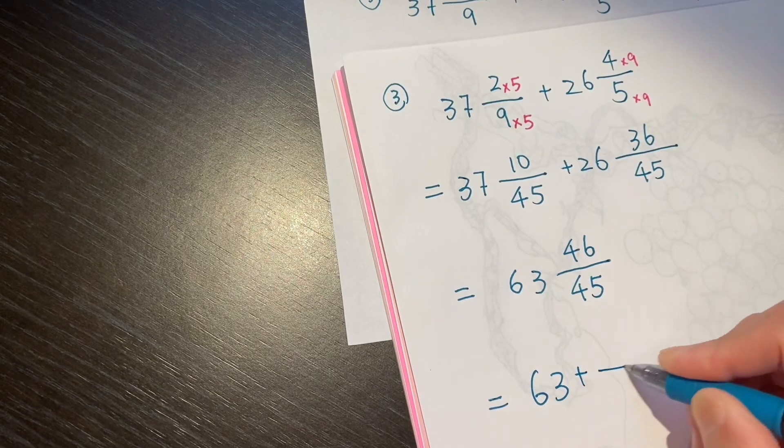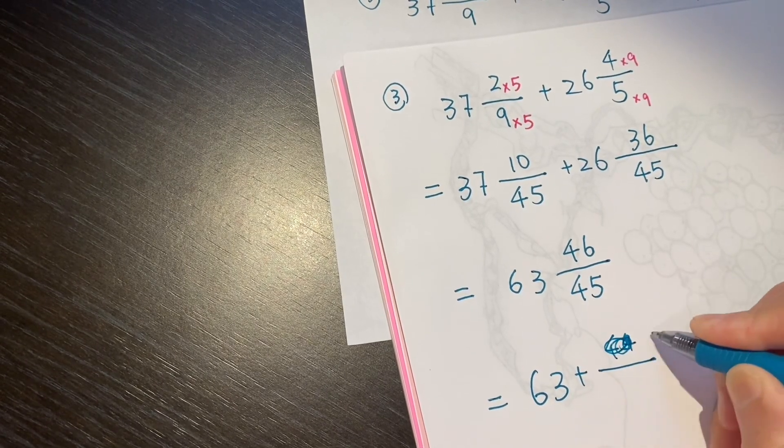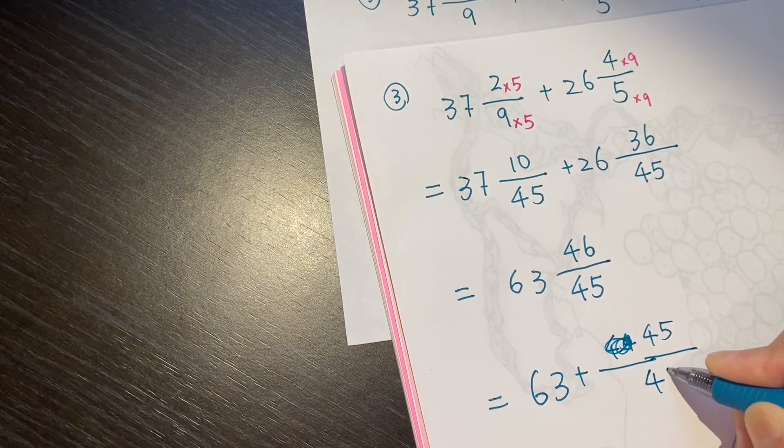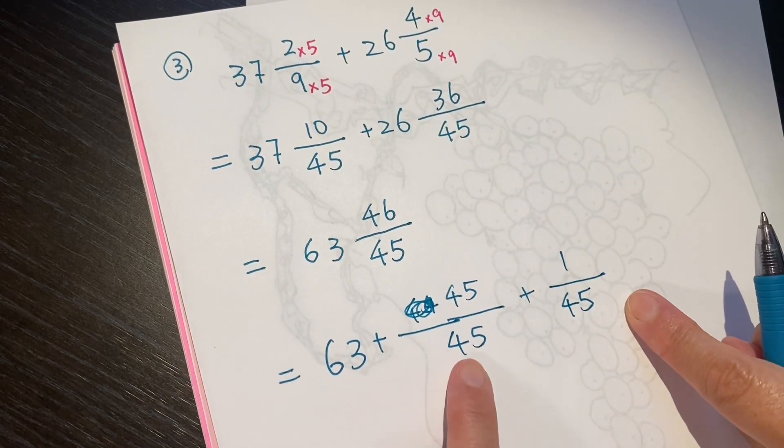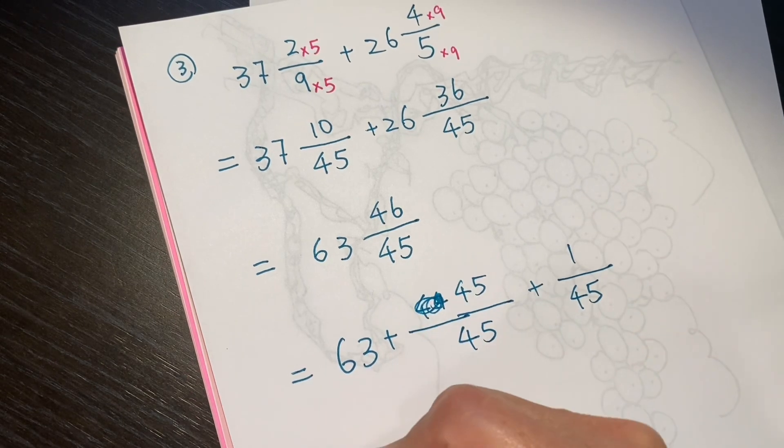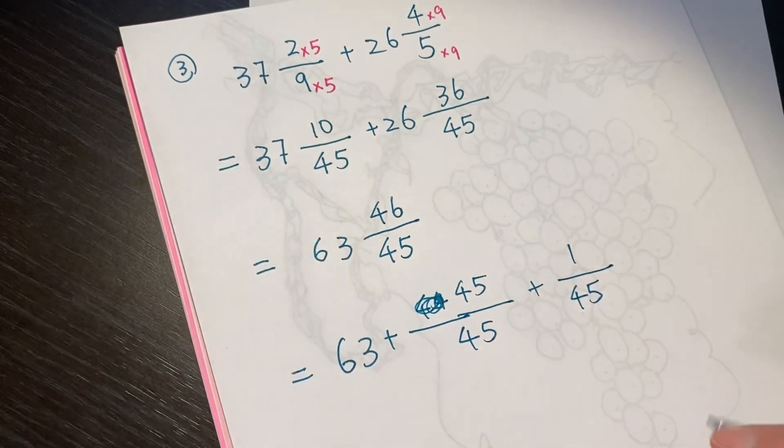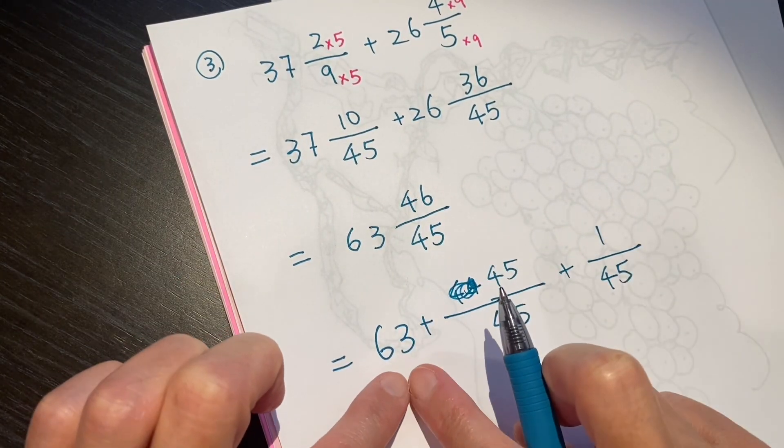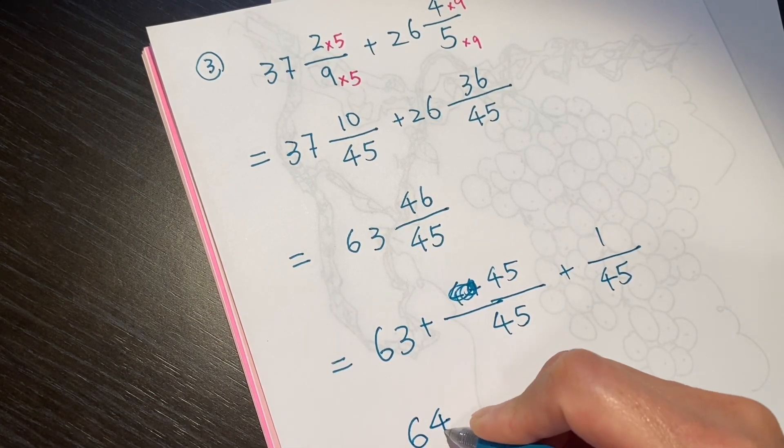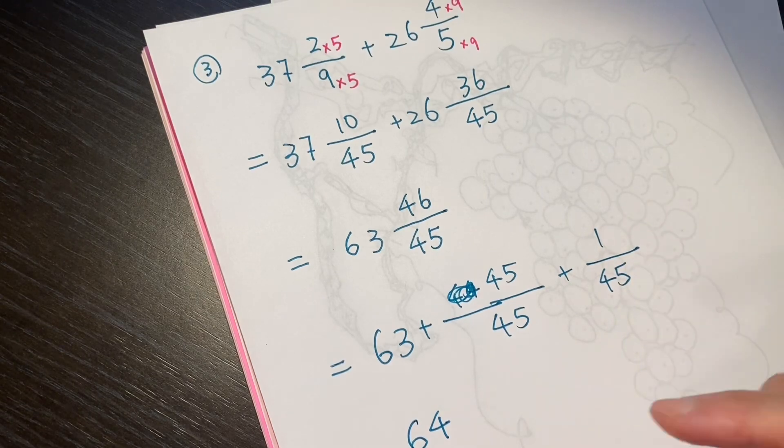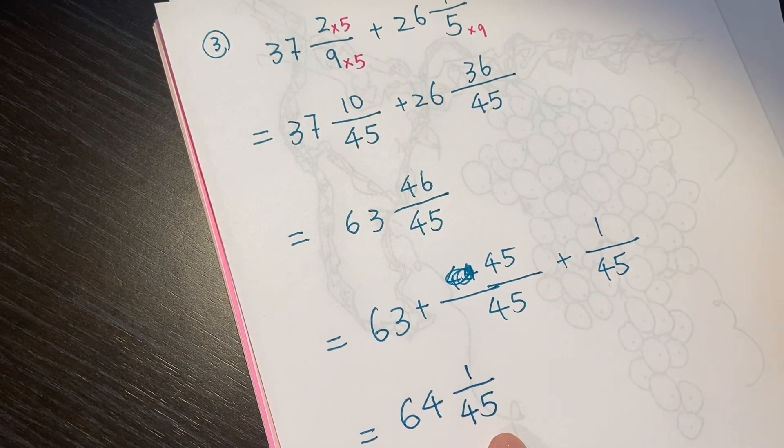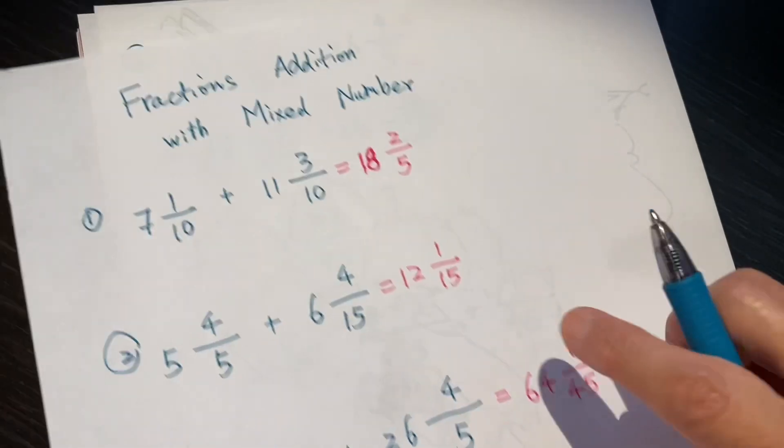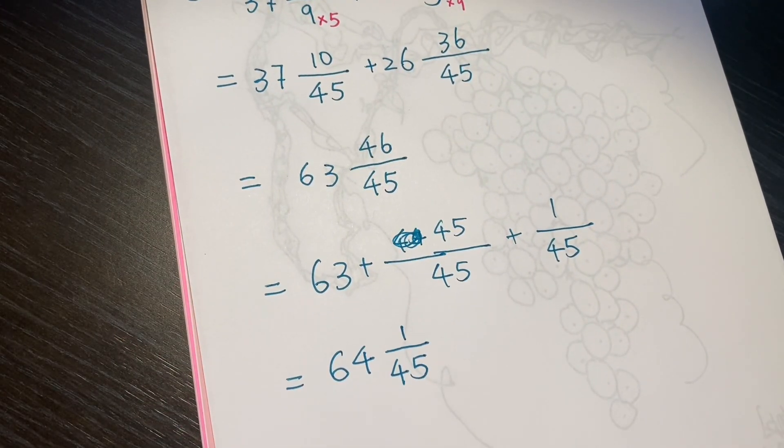63 plus 45 over 45 plus 1 over 45. Do I make it easier? And, this is 1, right? Denominator and numerator is the same. So, that is 1. So, 1 plus 63 becomes 64. And, then, the remaining, write it down. So, 64 and 1 over 45. Right? This is how we get the answer. Thank you very, very much.